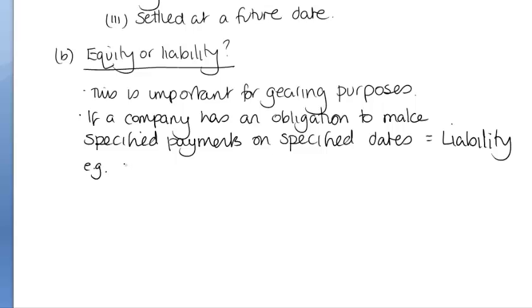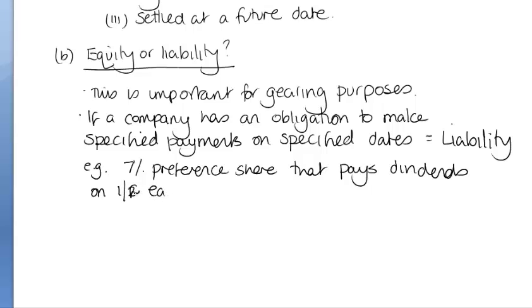For example, a 7% preference share that pays dividends on the 1st of February each year. And if you don't pay the dividend because you can't afford to, then you have to pay it the following year. So if it's a cumulative preference dividend, that would be a liability.